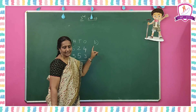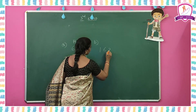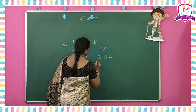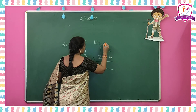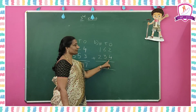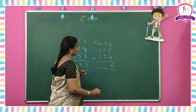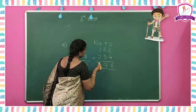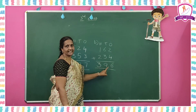Now come to sum B: one hundred and sixty-two plus two hundred and thirty-four. Write the places — hundreds, tens, ones. First add ones place: 2 plus 4 is 6, write 6 in ones place. Tens place: 6 plus 3 is 9, write 9 in tens place. Hundreds place: 1 plus 2 is 3, write 3 in hundreds place. The answer is three hundred and ninety-six — 3 hundreds, 9 tens, 6 ones.